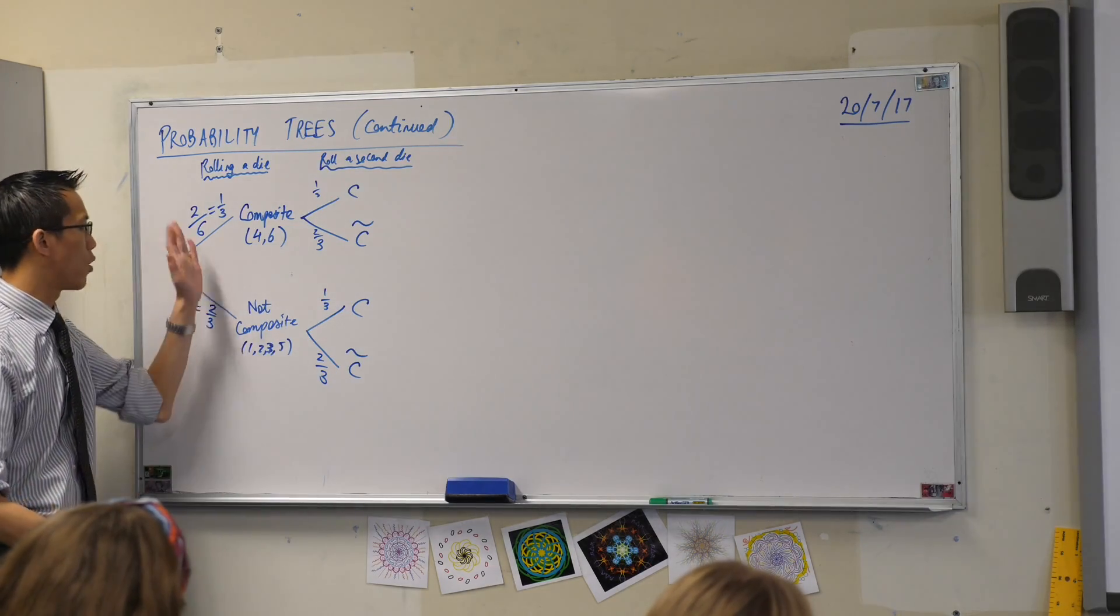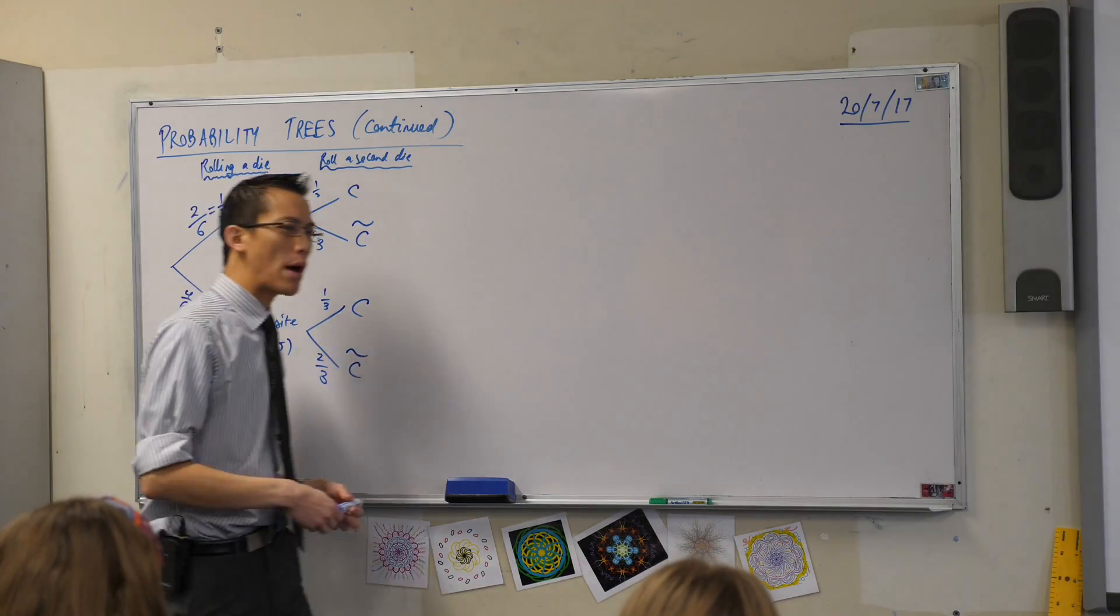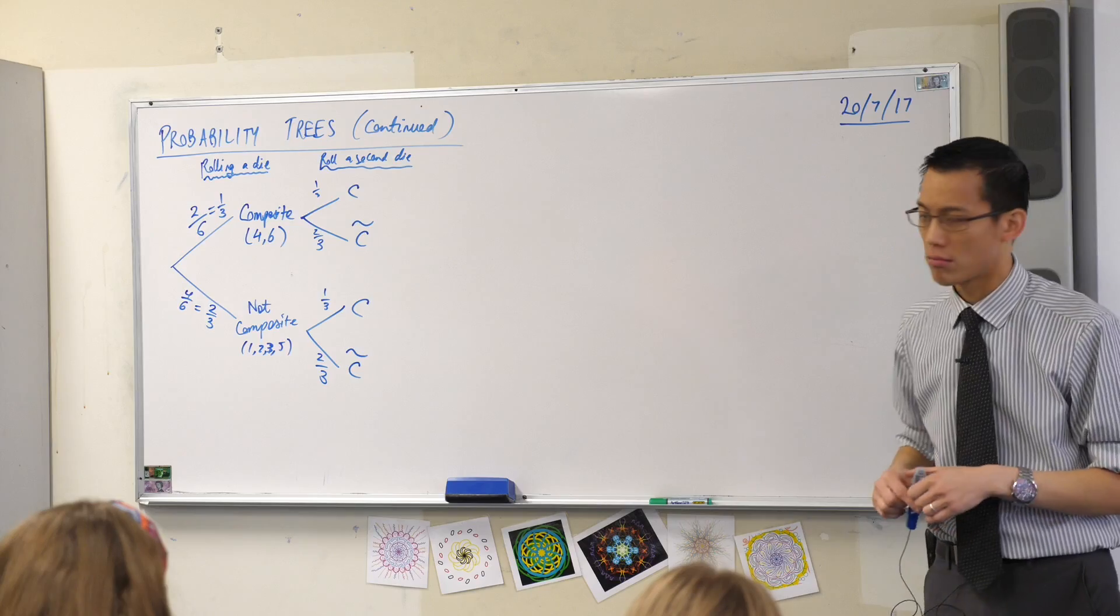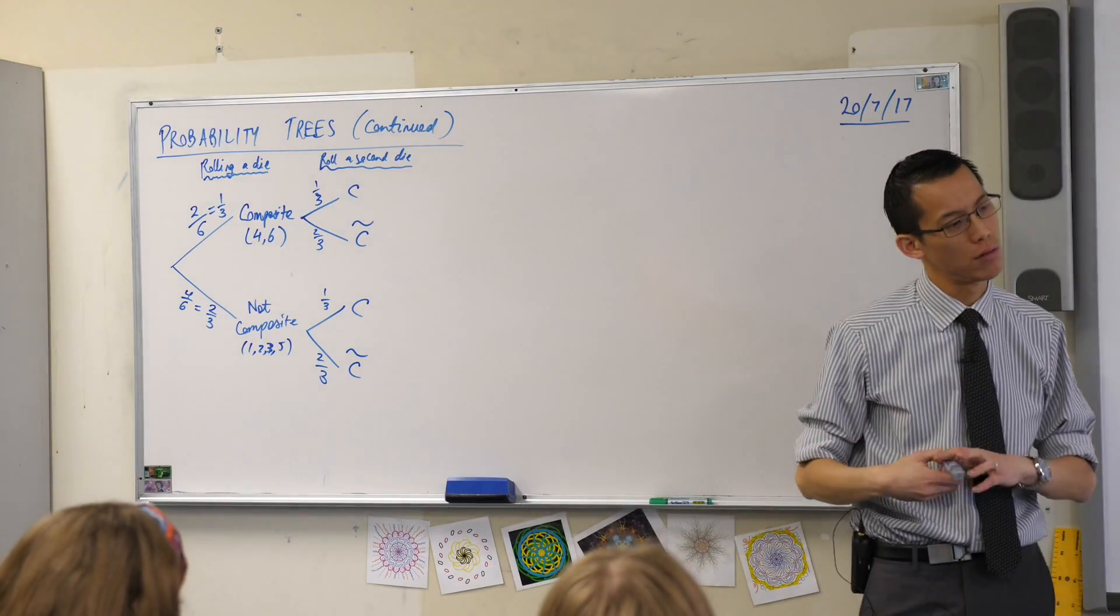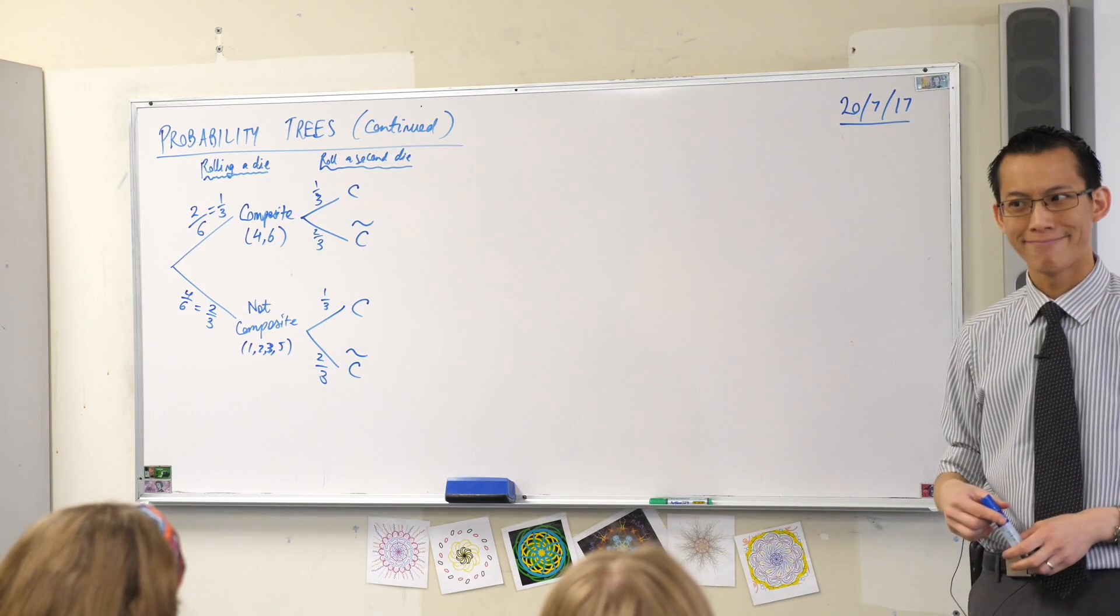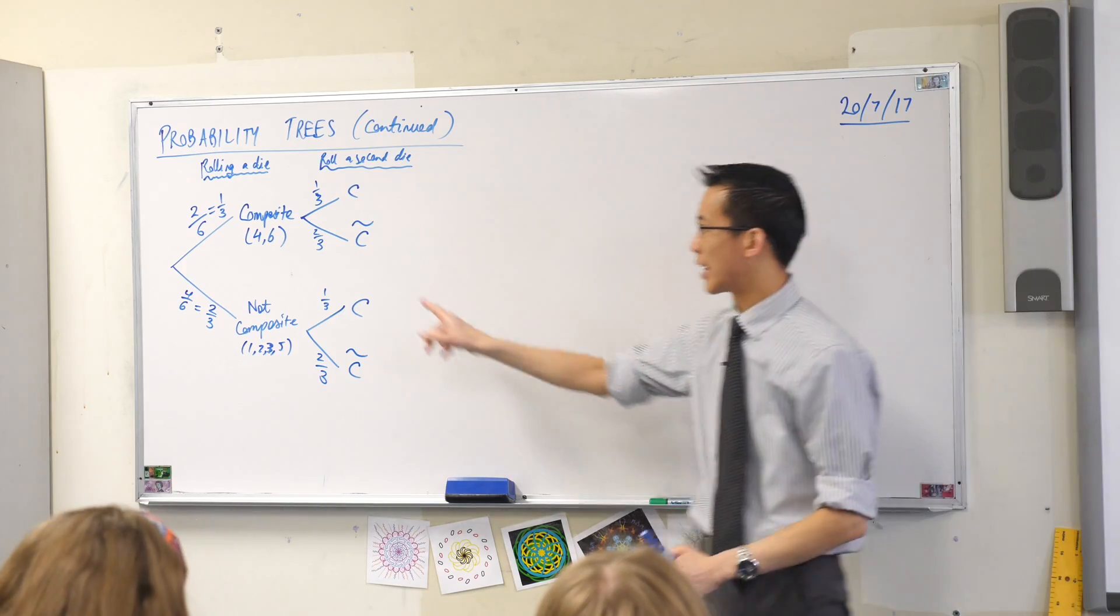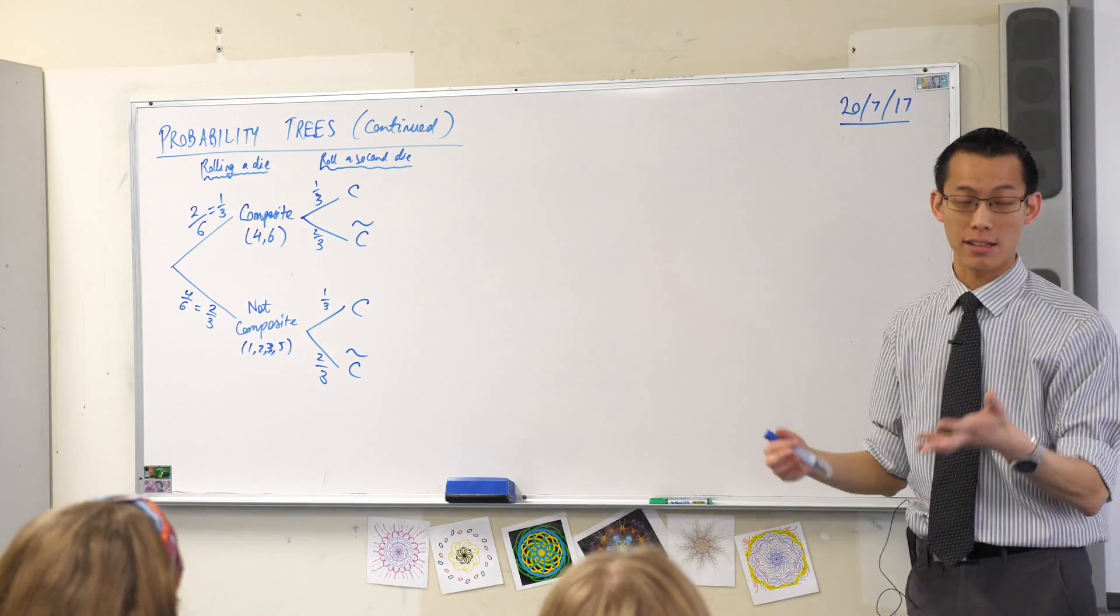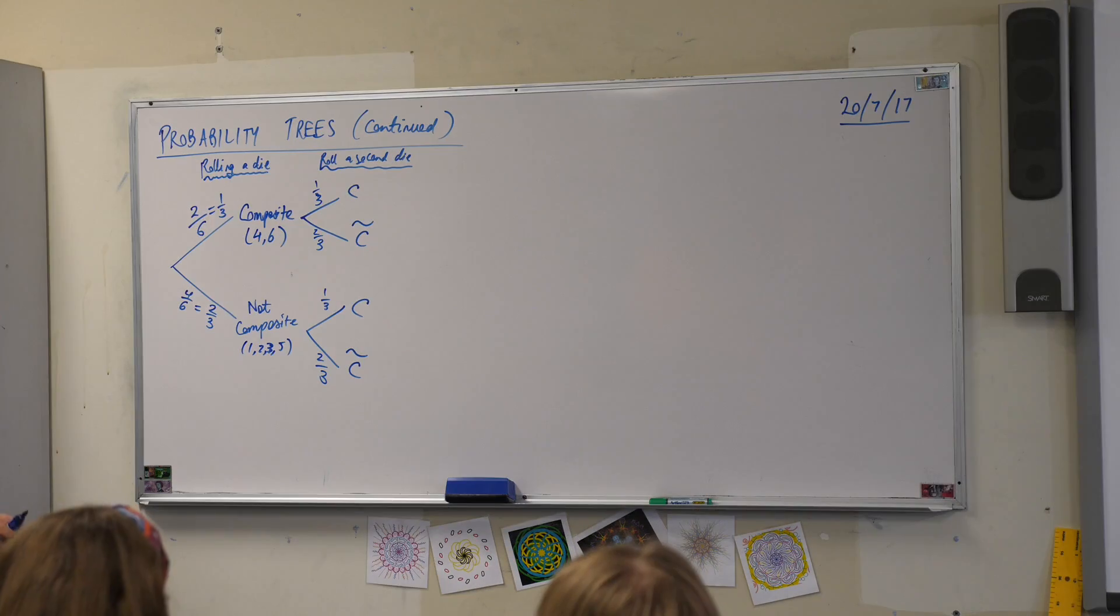You notice in this case, from one branch to the next, these probabilities are identical. Have you noticed that? Why would they be identical? Why didn't they change? Like, for example, doesn't it feel natural to you that after rolling a composite number, it's less likely to roll it again? No, it's not. Because we call these events independent. They don't have, like, this die doesn't care about this die. They're completely disconnected. It is actually true that it's less likely to roll two composite numbers, but for a different reason that I'm going to show you in a second.